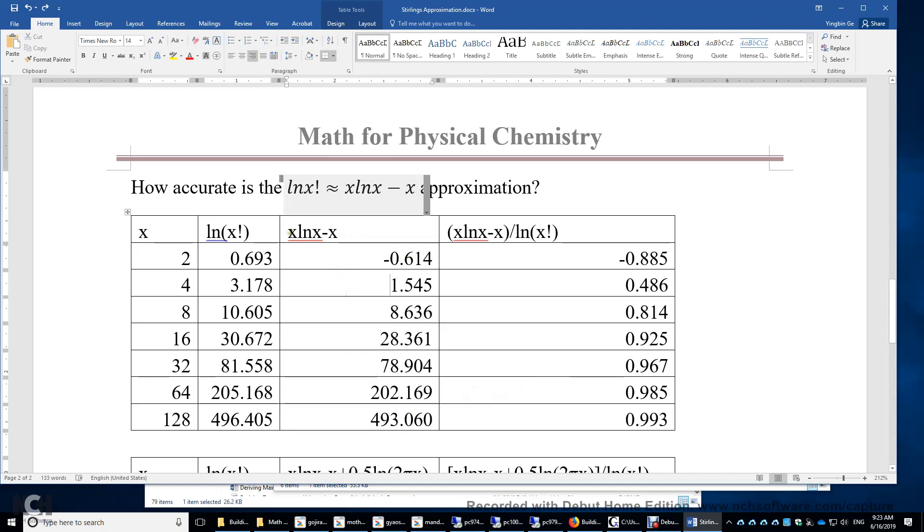And then we use the approximation divided by the exact value. So as long as the ratio is close to 1, we say the approximation is good, is accurate. So let's look at the first one. The first one is horrible. You get even a negative number.